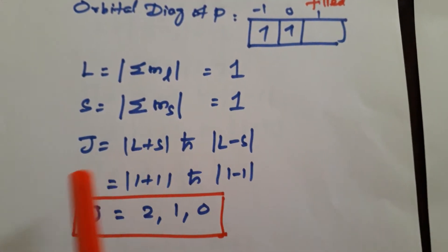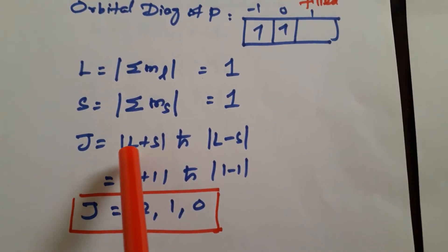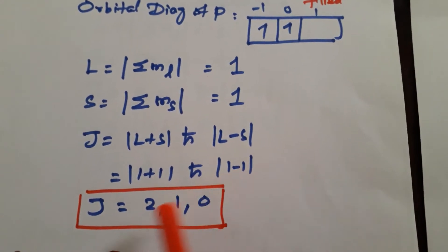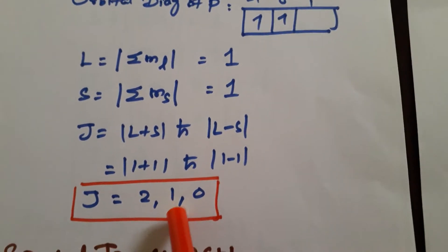We know it, L value, S value. From this J value you can get it: L plus S to L minus S. So 1 plus 1 is 2, 1 minus 1. J value will come 2, 1, 0.